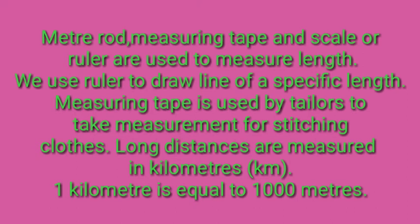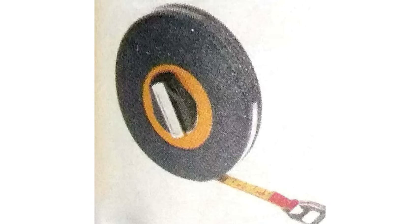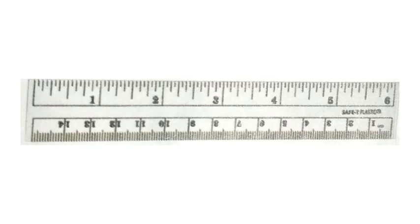We use a ruler to draw a line of a specific length. Measuring tape is used by tailors to take measurements for stitching clothes. Long distances are measured in kilometers — one kilometer is equal to one thousand meters. Here is a meter tape, and here is a scale from your compass box. With the help of the scale, we can measure centimeters.